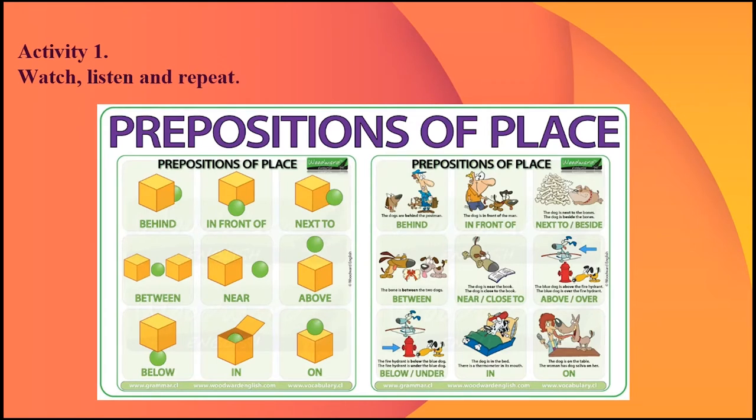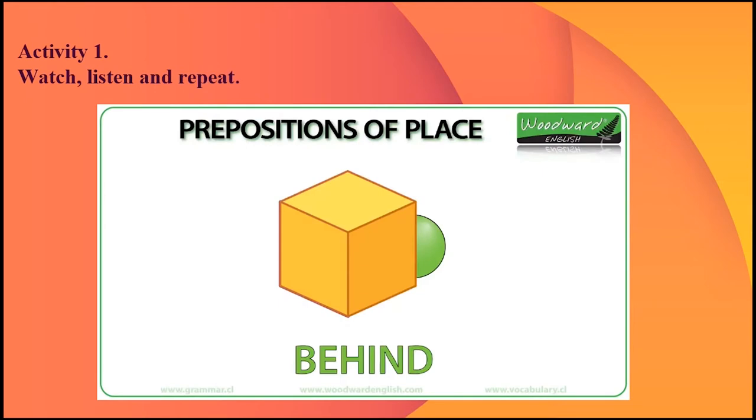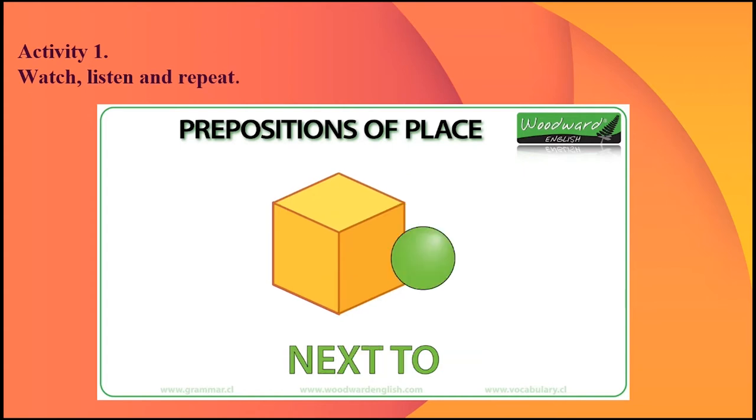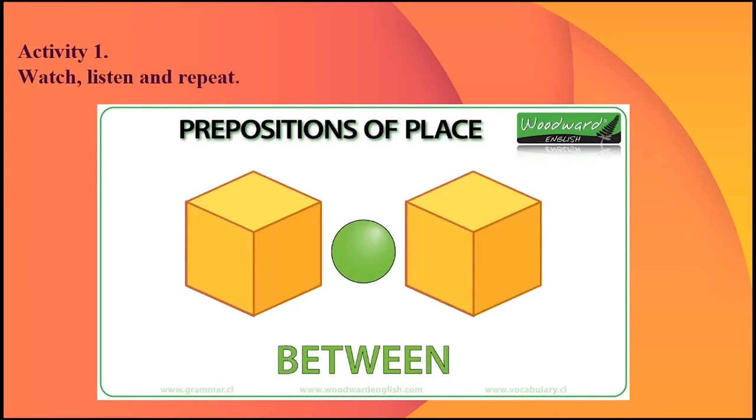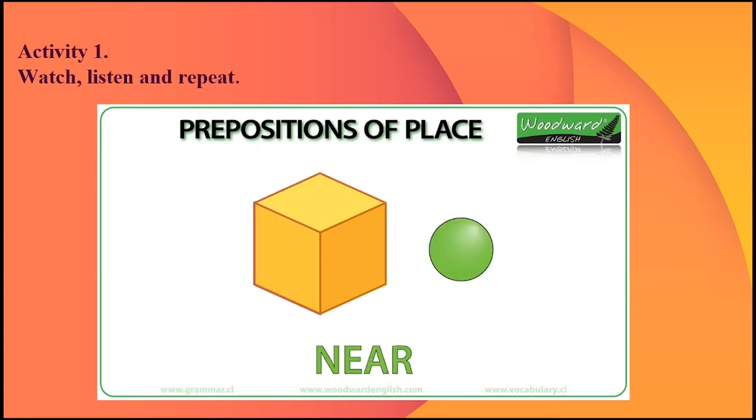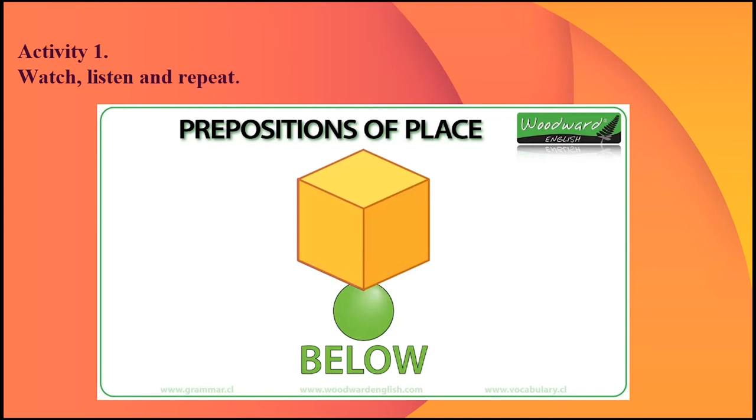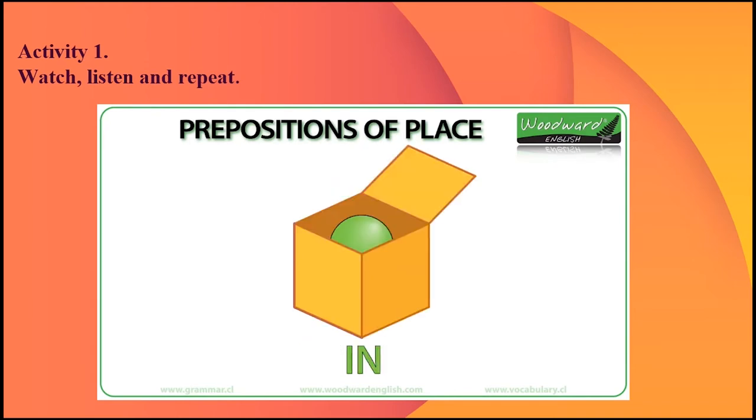Basic prepositions of place in English. Behind. In front of. Next to. Between. Near. Above. Below. In. On.